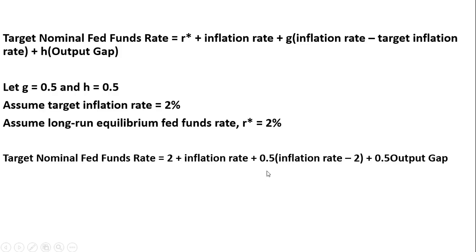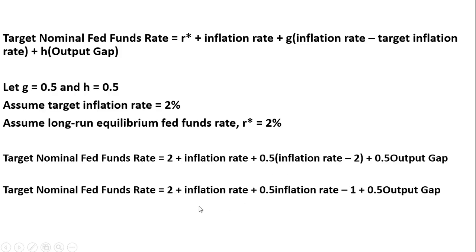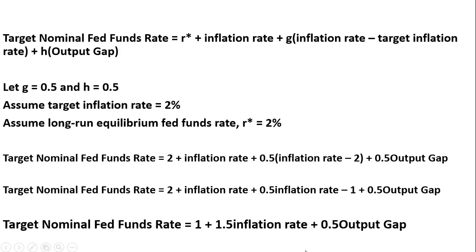Plugging in those values: R-star is 2, G is 0.5, the target inflation rate is 2%, and H is 0.5. Simplifying, the 0.5 multiplied by minus 2 gives minus 1, and 2 minus 1 gives us 1. This yields the simplified John Taylor rule based on these assumptions.